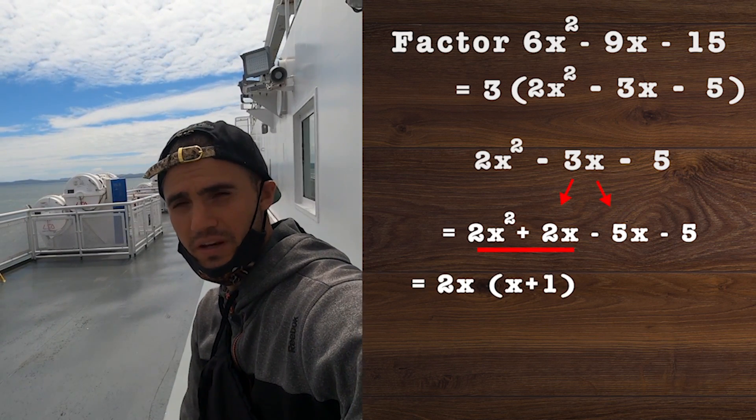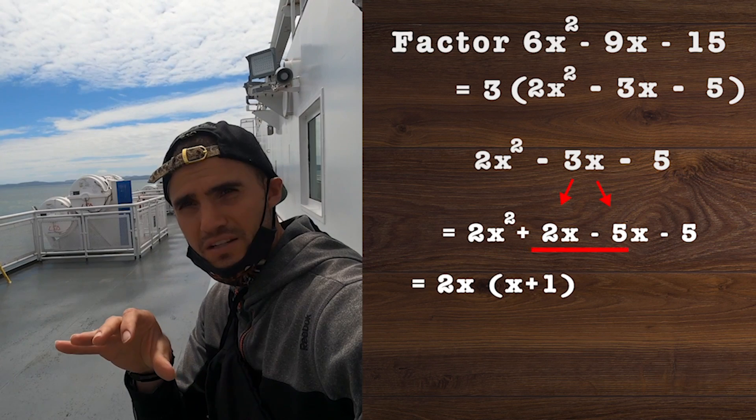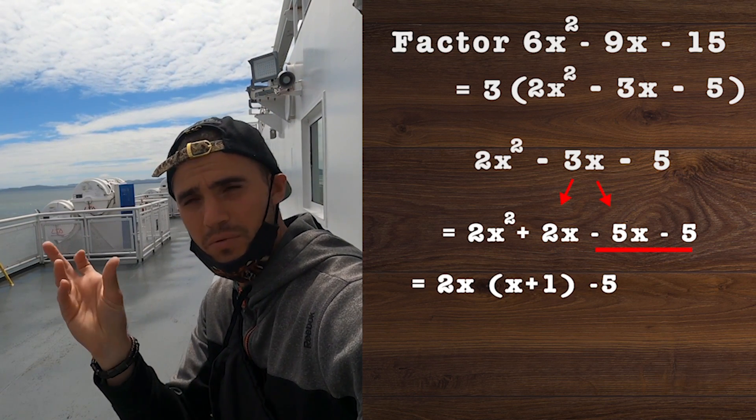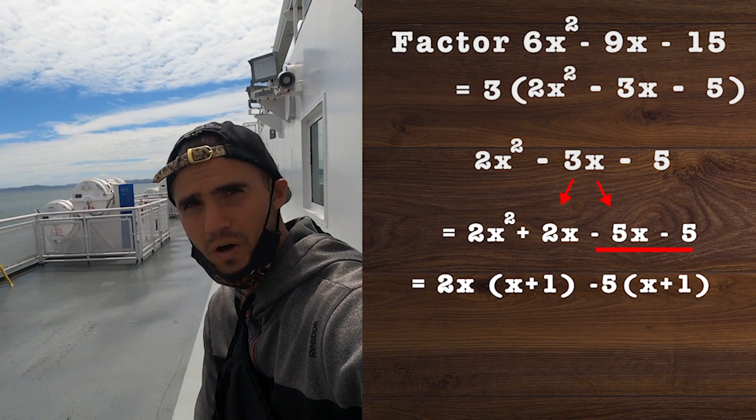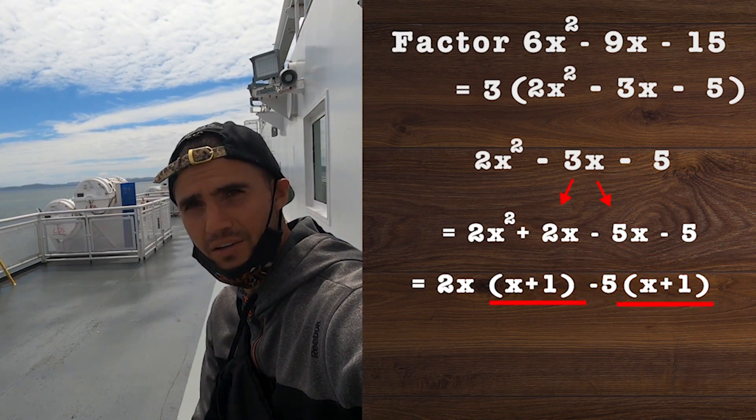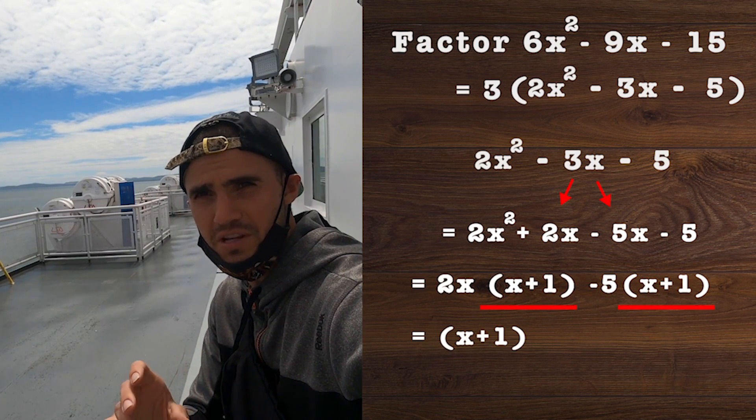From the first two terms, 2x² + 2x, notice that we can take out a 2x from both, and we'd be left in brackets with x + 1. From the -5x - 5, we can take out a -5, and we'd be left with the same bracket, x + 1.